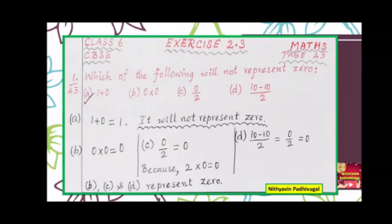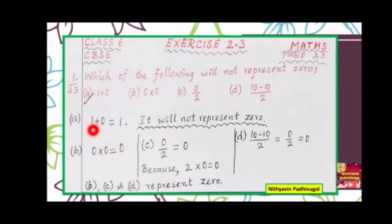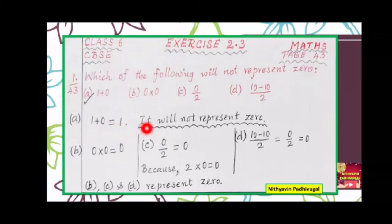Let us do them one by one. 1 plus 0 is equal to 1, because 0 plus any number is equal to the number itself. So 1 plus 0 is equal to 1. We can conclude that this expression will not represent 0.